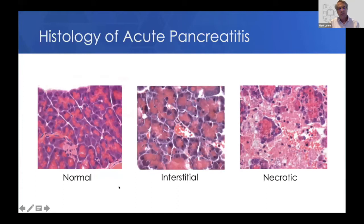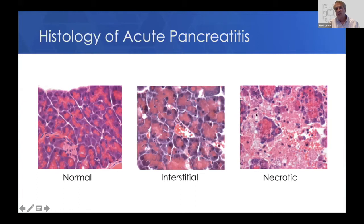Just like adults, acute pancreatitis comes in two types. The most common is interstitial — this is a normal pancreas compared to one with acute pancreatitis where you can see more white spaces, inflammatory cells, and dying cells, but the acinar cells are still present. A more serious type is necrotizing pancreatitis, where you lose a lot of the pancreatic acinar cells, and there can be hemorrhagic necrosis. Both of these types occur in children as they do in adults.